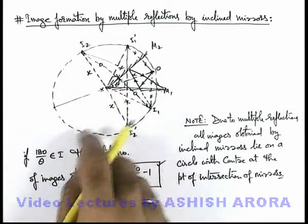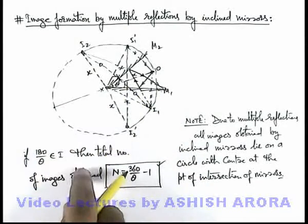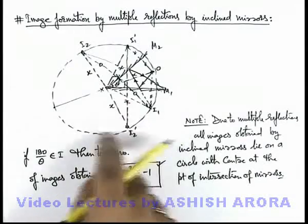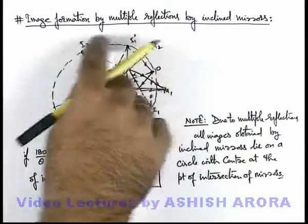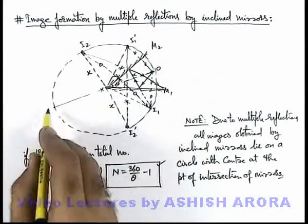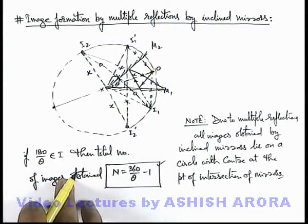Because this angle will be theta by 2, and all these number of images will be same as number of images obtained on the other part, and one image will be coinciding at the opposite point.